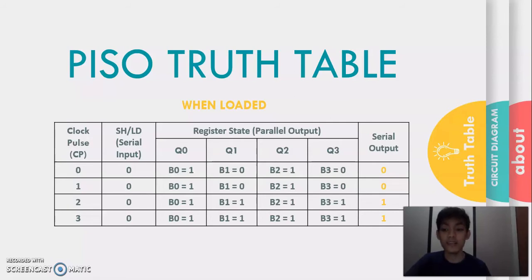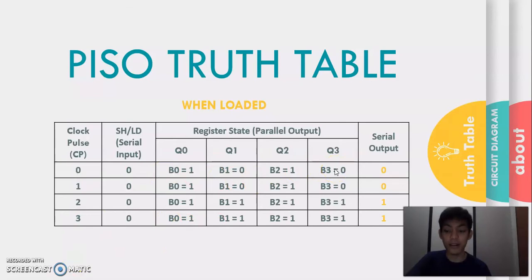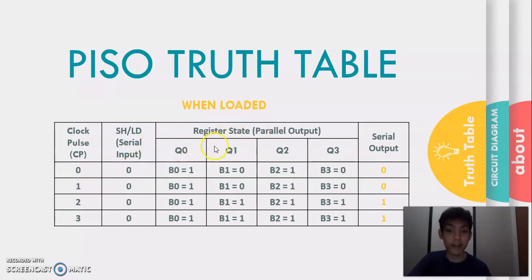When the parallel in serial out shift register is loaded, we can see that whatever the value of the input bits are will also be the value of the output bits, regardless of the clock cycles, unless the input bits are changed. Let us see the working of a 4-bit parallel in serial out shift register by applying the binary information 1, 0, 1, 0 in parallel through binary inputs. Since the binary inputs are applied before the positive edge of the clock, the initial status of the D flip-flops from leftmost to rightmost will be the same as the binary inputs.